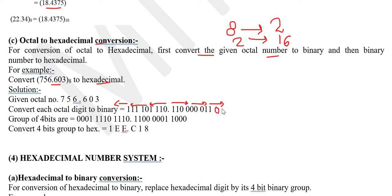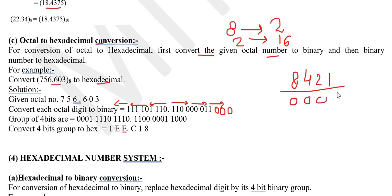Using the 8-4-2-1 code for hexadecimal: 0-0-0-1 represents the value 1. Then 1-1-1-0 means 8 plus 4 plus 2, which equals 14. In hexadecimal, we don't write 10 through 15 as numbers — we represent 10 as A, 11 as B, 12 as C, 13 as D, 14 as E.